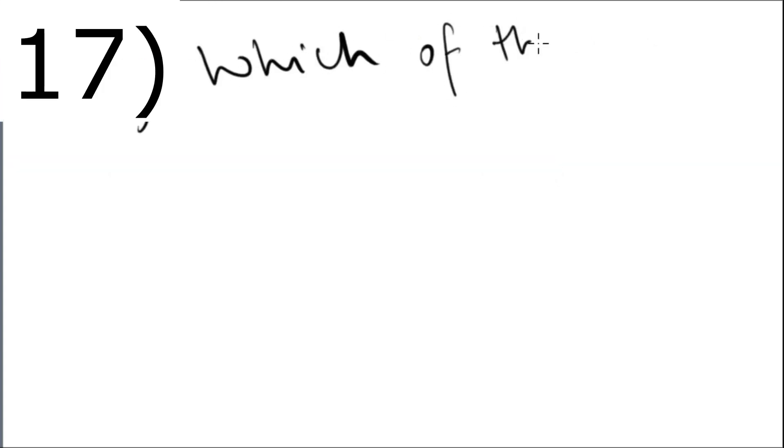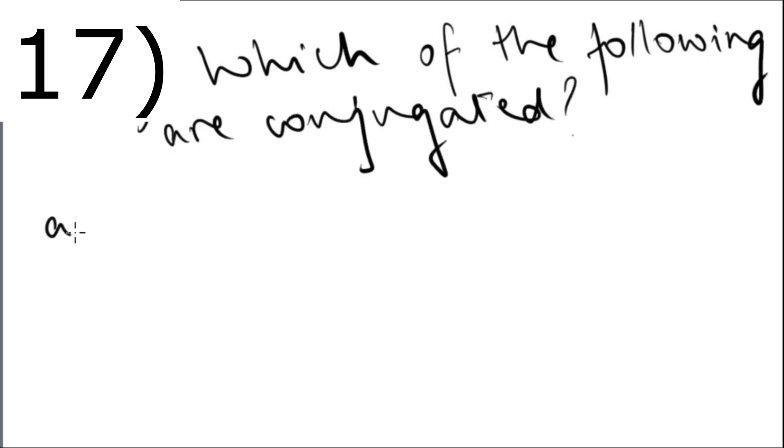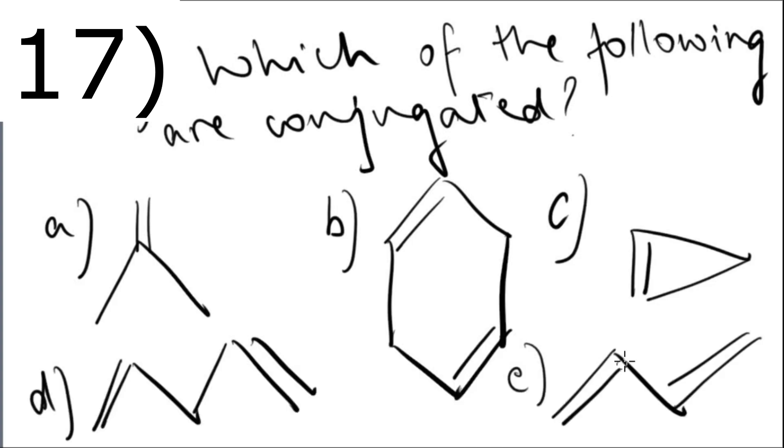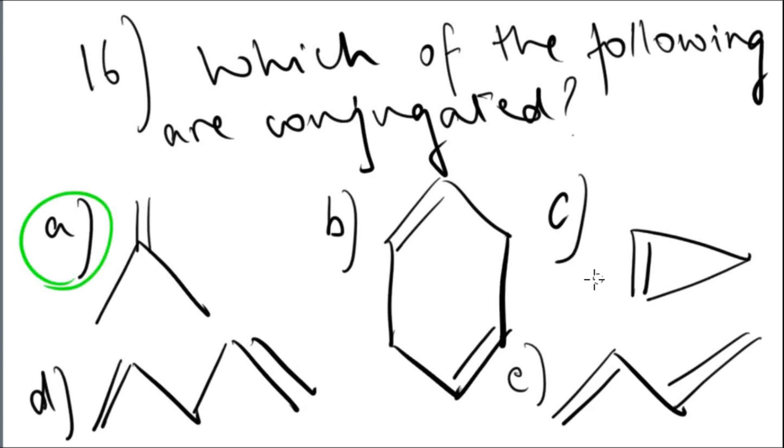For question number 17, I will show you a few structures and you have to tell me which one, or which ones, are conjugated. Going by the yes-no method, it's a, c, and e.